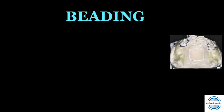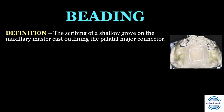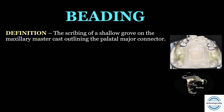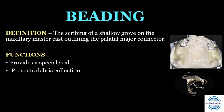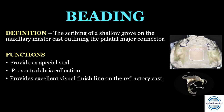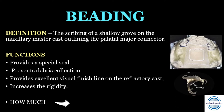When talking about the borders of the major connector, an important topic is beading — it separately comes as a short note in theory exams and MCQs are framed from it. Beading is the scribing of a shallow groove on the maxillary master cast outlining the palatal major connector. It comes as a bead on the tissue side of the metal framework. Its functions: first, it provides a special seal to the maxillary major connector, preventing debris collection; second, it provides an excellent visual finish line on the refractory cast; third, the extra thickness obtained as a bead increases the rigidity of the framework. Beading is done approximately 0.5 mm in width and depth.